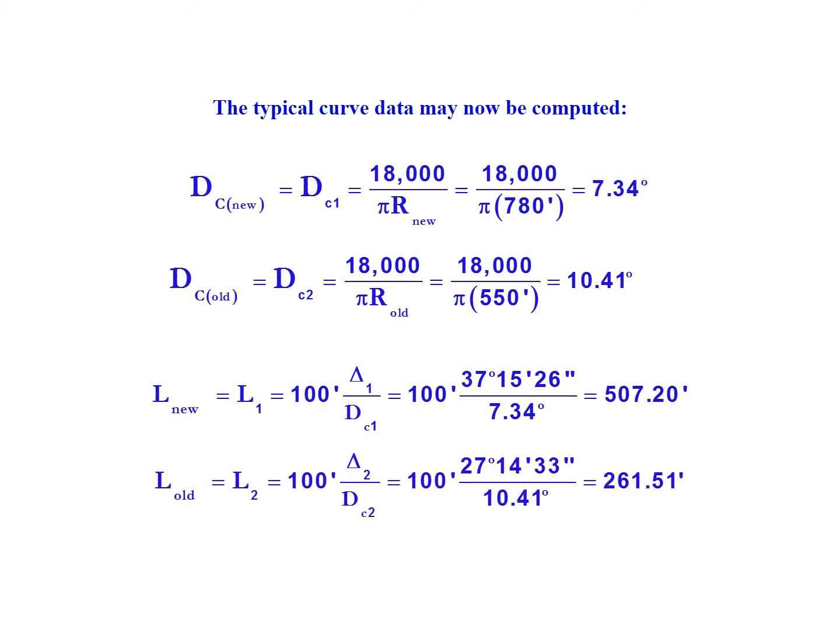Similarly, we're going to calculate the length of the existing curve L2. Again, this is actually the length of the curve that's closer to the PC. This is 100 times 27 degrees 14 minutes 33 seconds divided by 10.41 degrees, gives us an L2 of 261.51 feet.